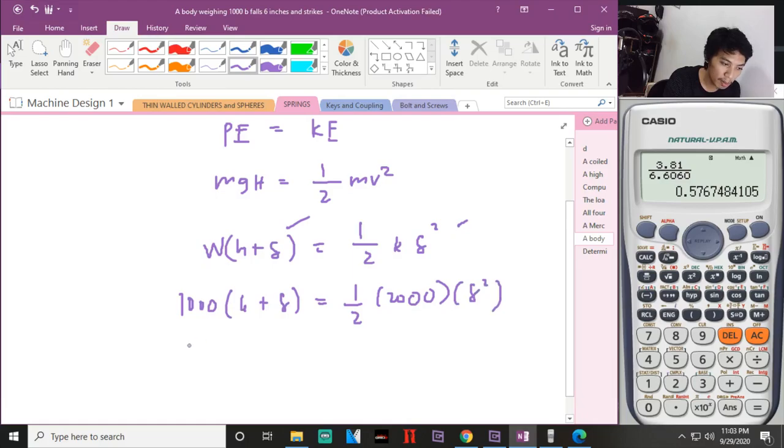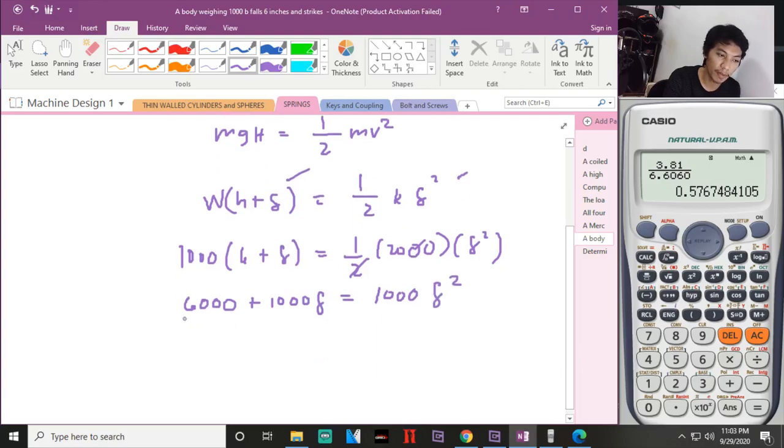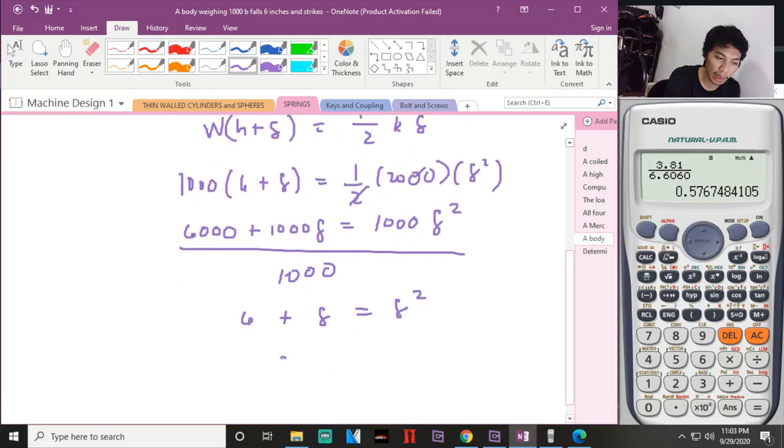So six times 1000, 6000 plus 1000 times the deflection equal to - cancel this to 1000 - 1000 times the deflection. Rearrange this, divide both sides by 1000. So this will be six plus deflection equal to deflection squared.